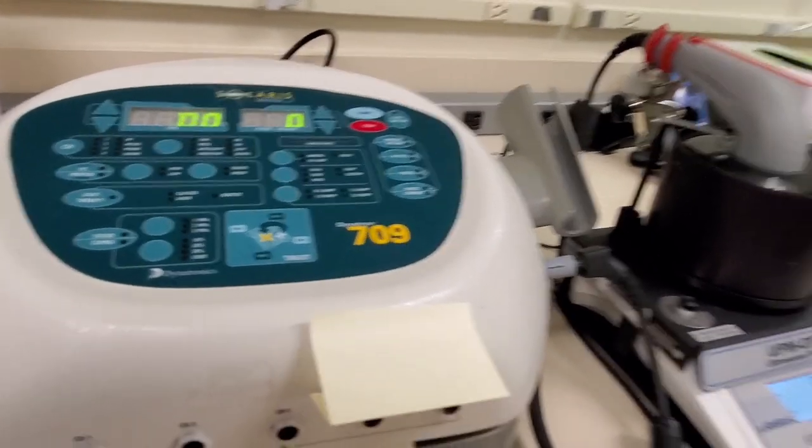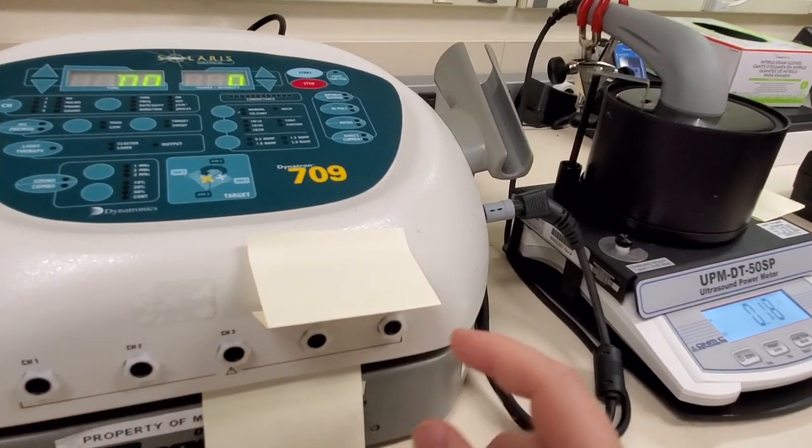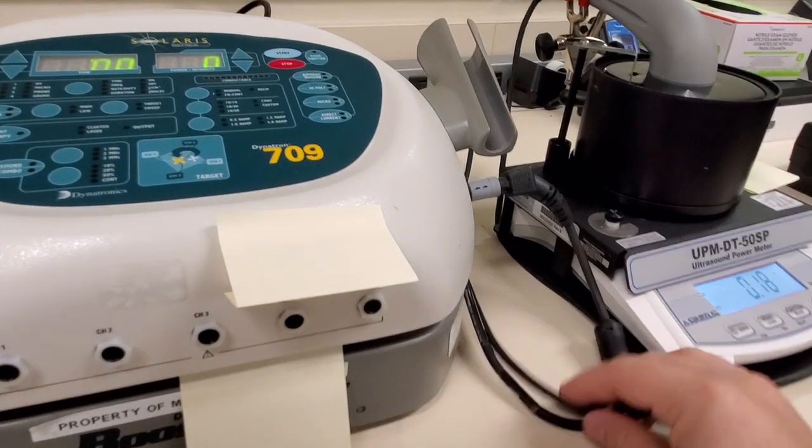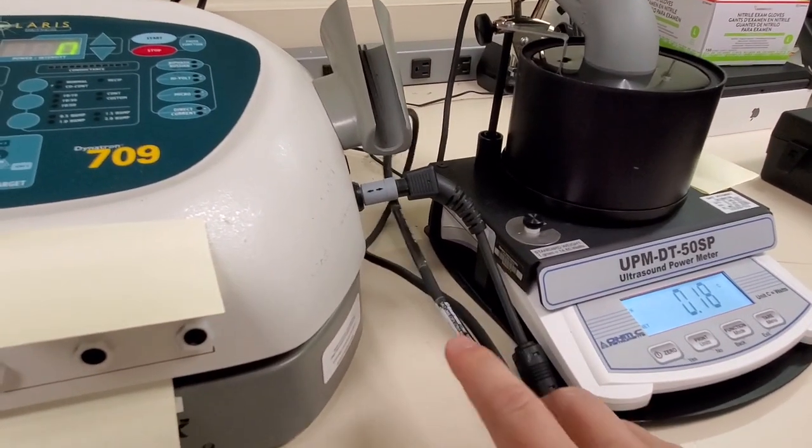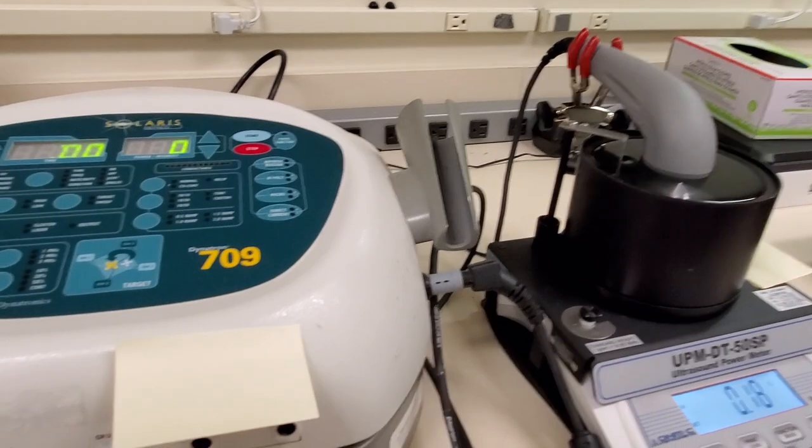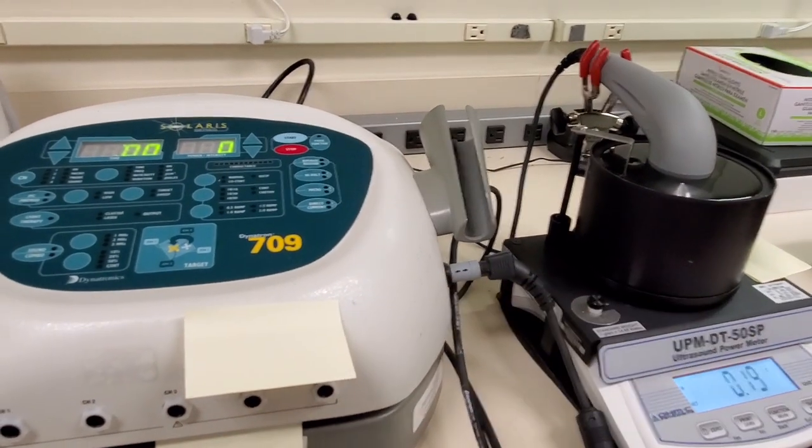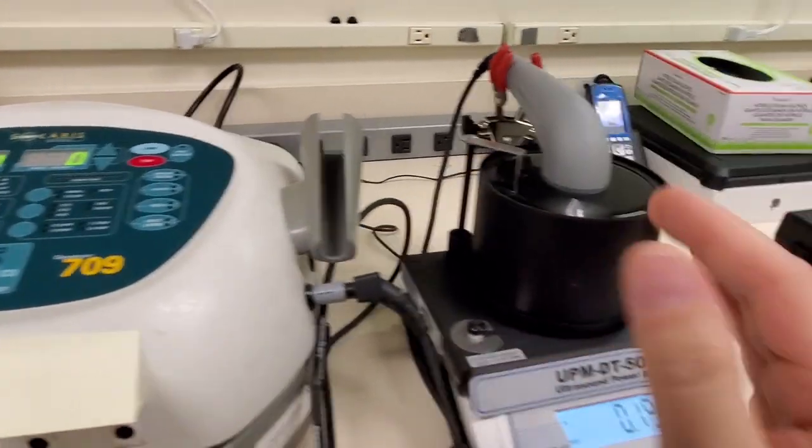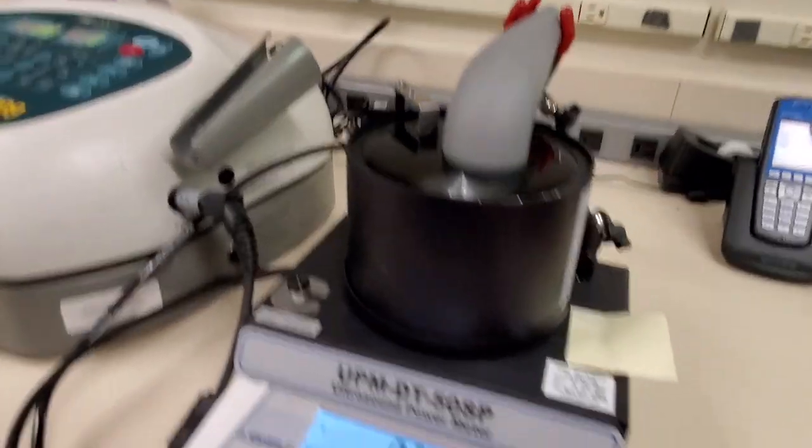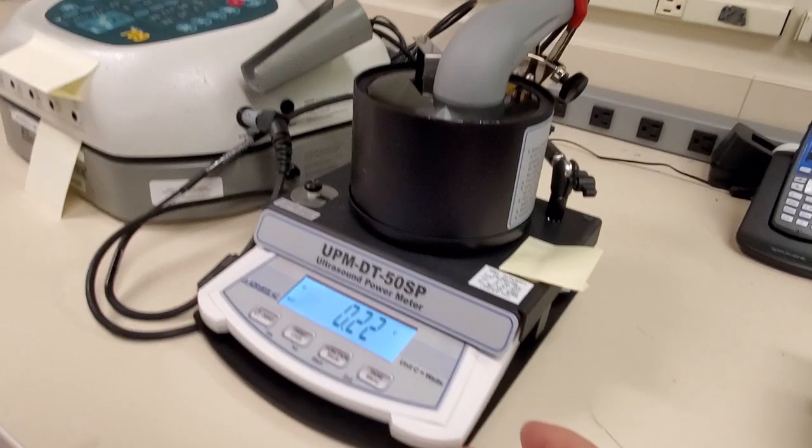And the only way that I can do that at this point is I have to call the manufacturer. This unit right here has got a serial number on the probe - you can see it's on the little sticker - and they will read back to me the settings line for line that I have to put back into the base unit to get the head to begin to work again.